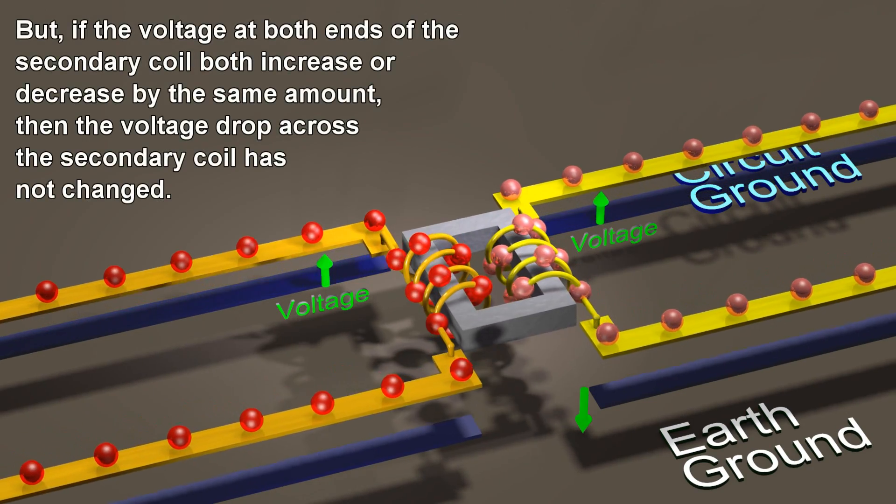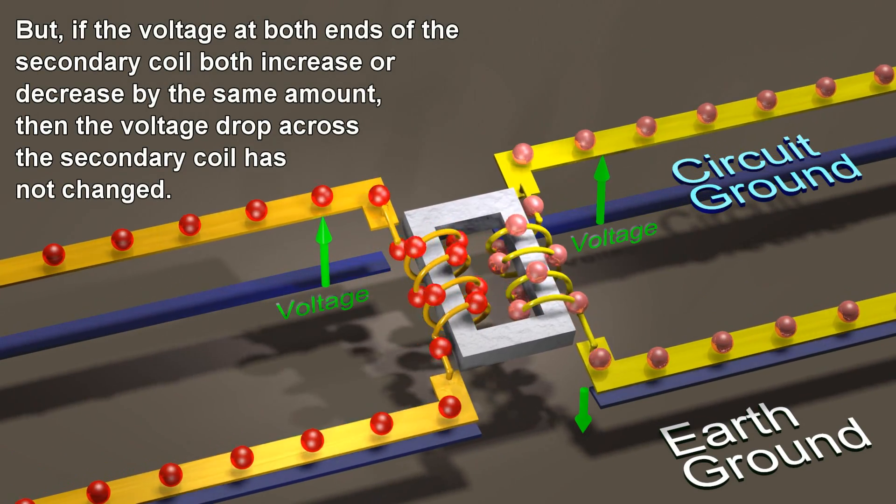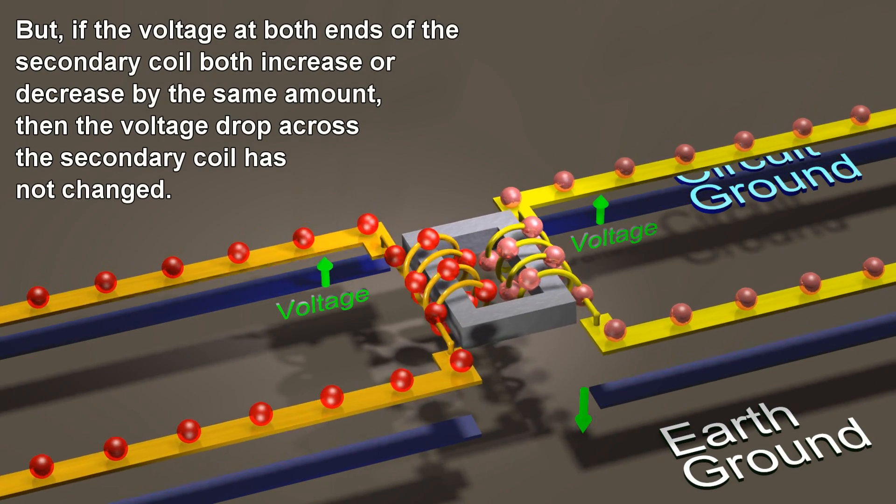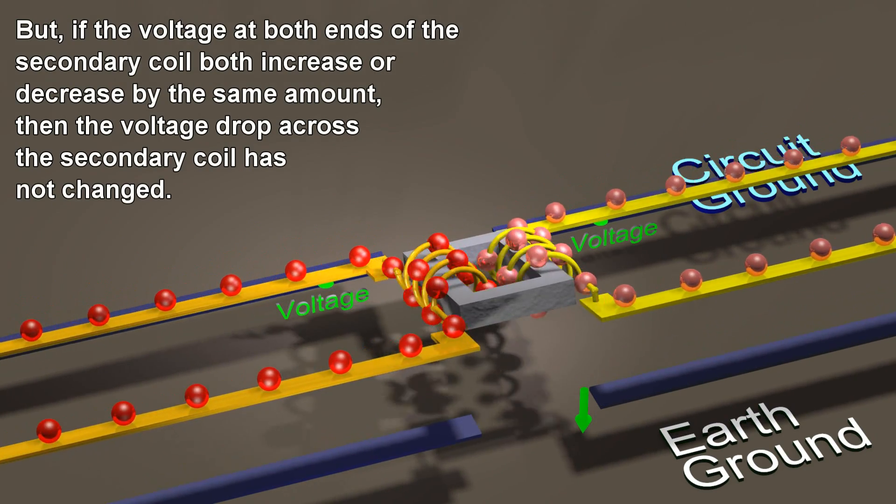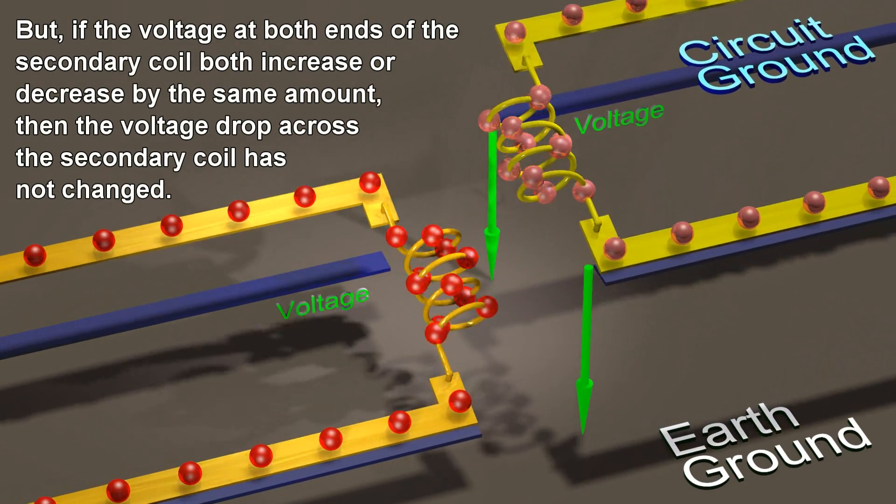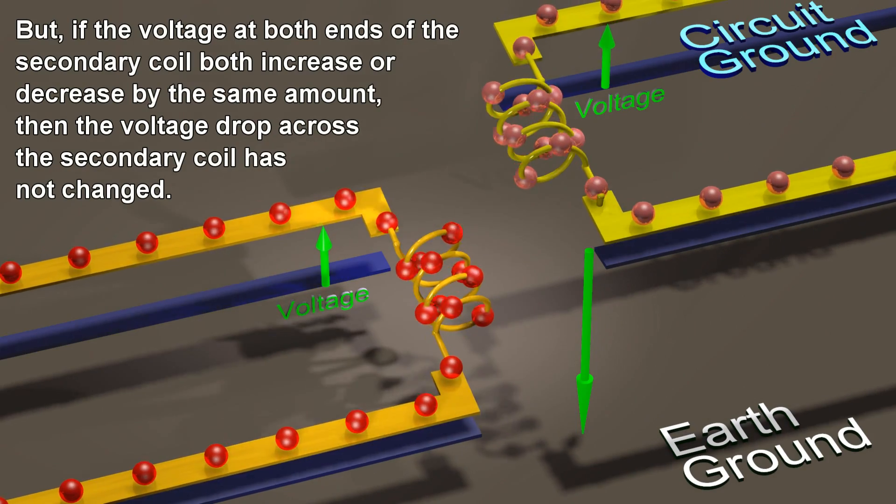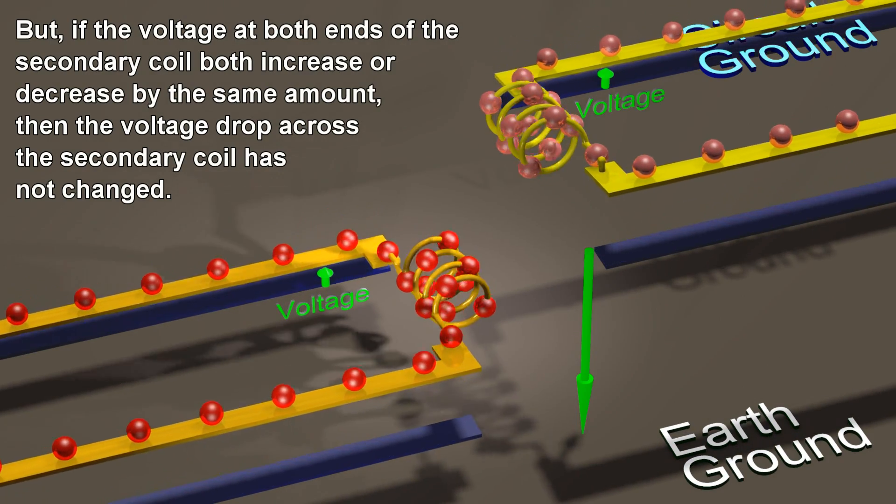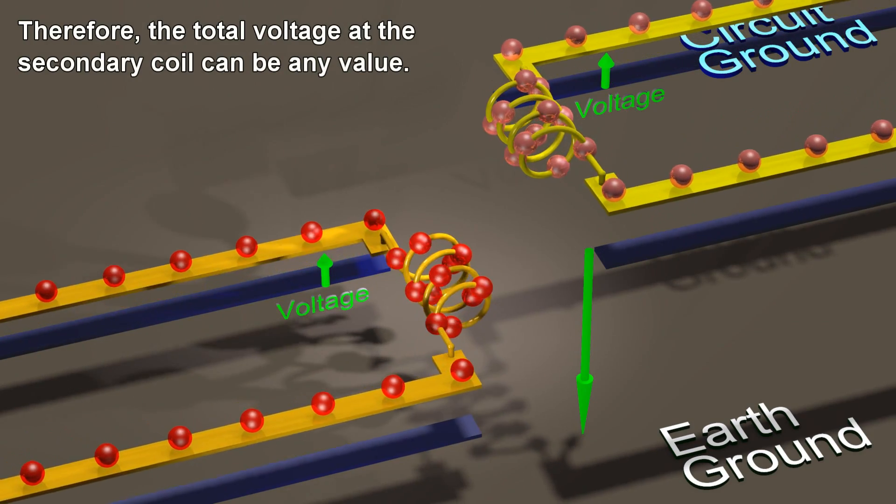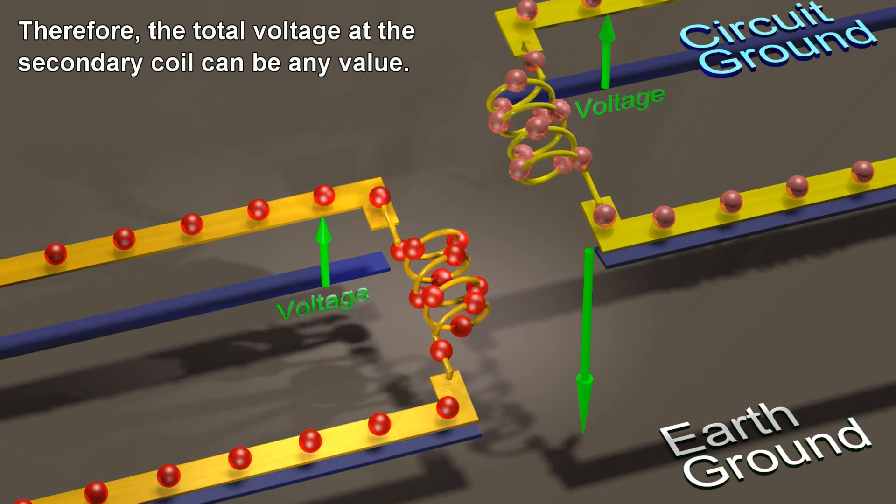But if the voltage at both ends of the secondary coil both increase or decrease by the same amount, then the voltage drop across the secondary coil has not changed. Therefore, the total voltage at the secondary coil can be any value.